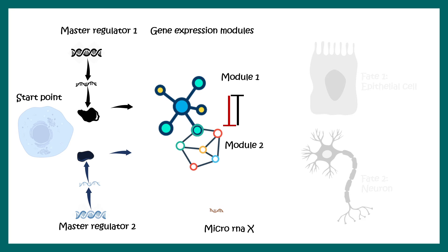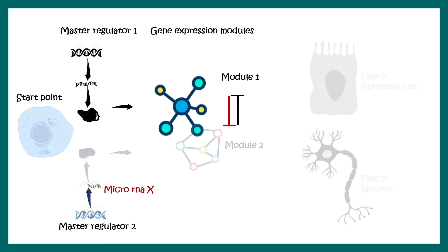Imagine there is a developmentally regulated microRNA. At one point of development, this microRNA becomes predominant and binds to master regulator 2's mRNA transcript, inhibiting the production of master regulator 2. As a result, the gene module controlled by master regulator 2 is downregulated and its suppression is removed. The gene module controlled by master regulator 1 now dominates, and one particular fate is chosen. This is how fate determination happens, and these epigenetic and chromatin modulations can combine in multiple ways.